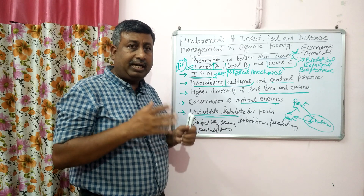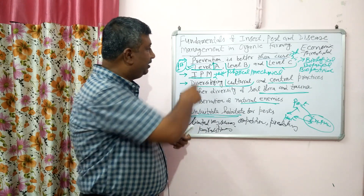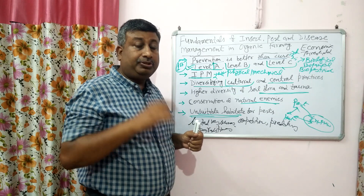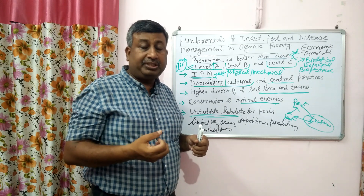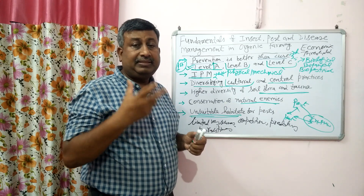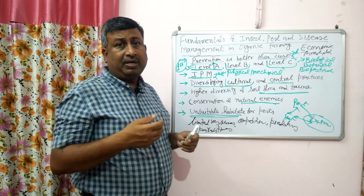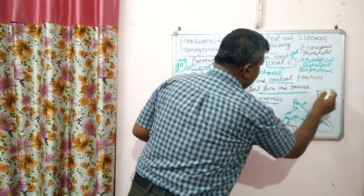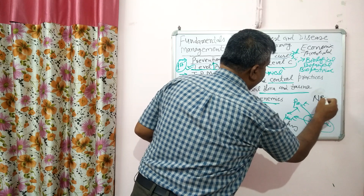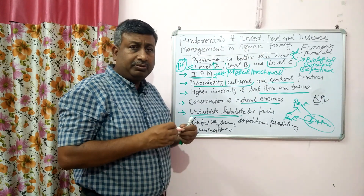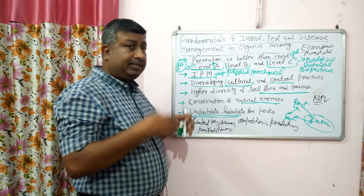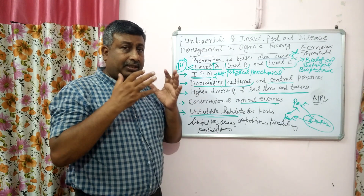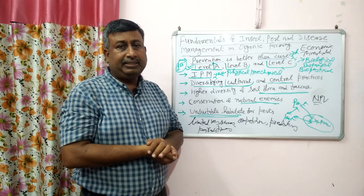These are the fundamentals: first use preventive methods — Level A, the first line of defense. Then use physical and mechanical methods to control their population. Then Level C — biological agents, biopesticides, and microbial pesticides. For example, Bacillus thuringiensis (Bt) is a very important microbial insecticide. Beauveria bassiana is a very important fungus for insect control. Nuclear Polyhedrosis Virus (NPV) can also be used to control insects. We should integrate diversifying the system, diversifying soil microflora, conservation of natural enemies, and making habitats unsuitable — these are the fundamentals for management of insect pests and diseases in organic farming. Thank you very much.